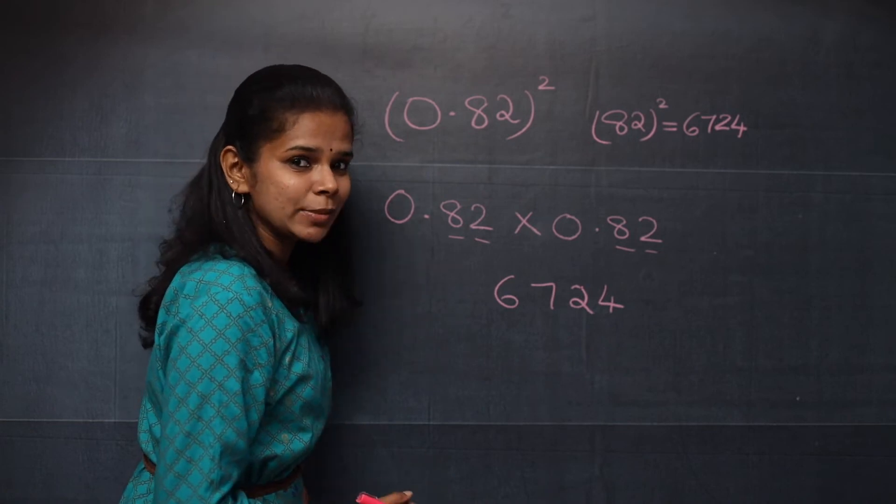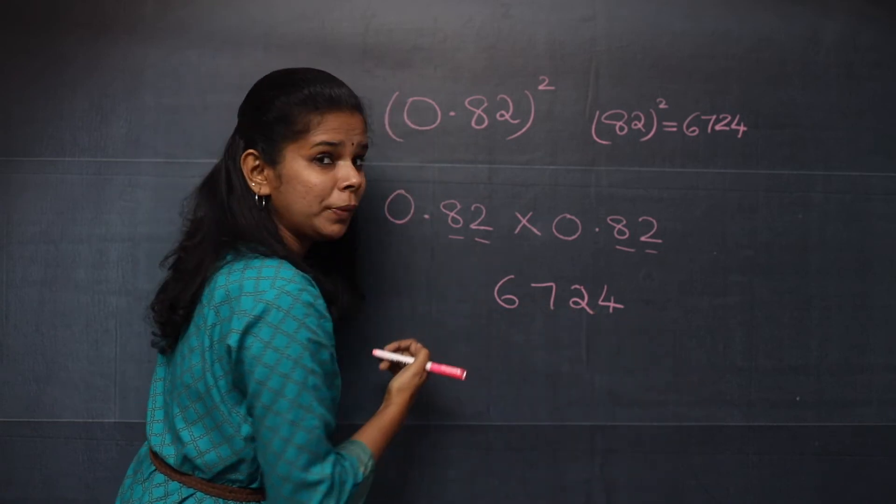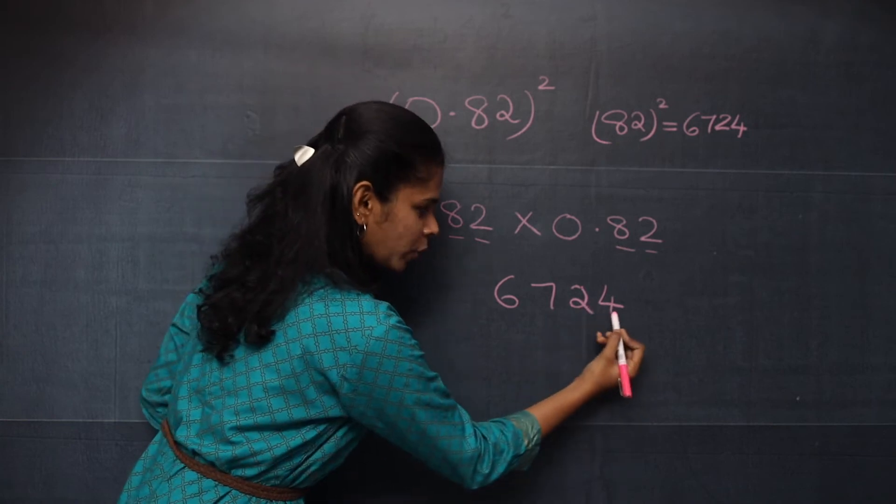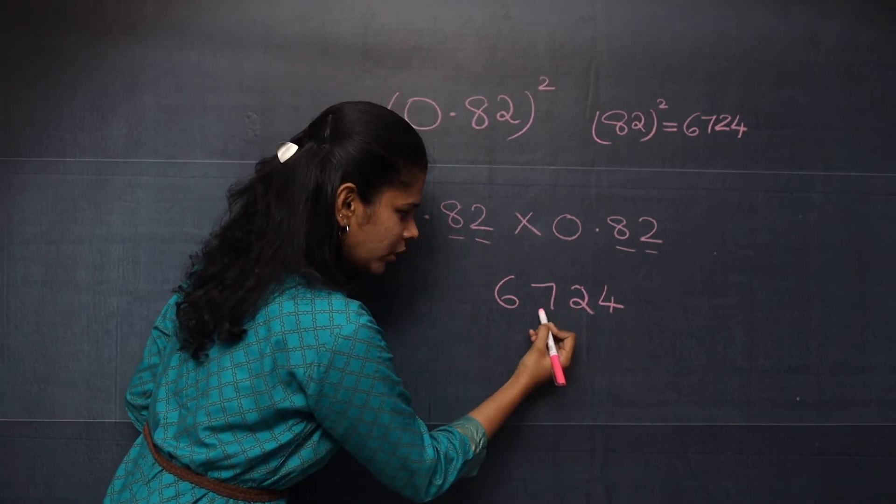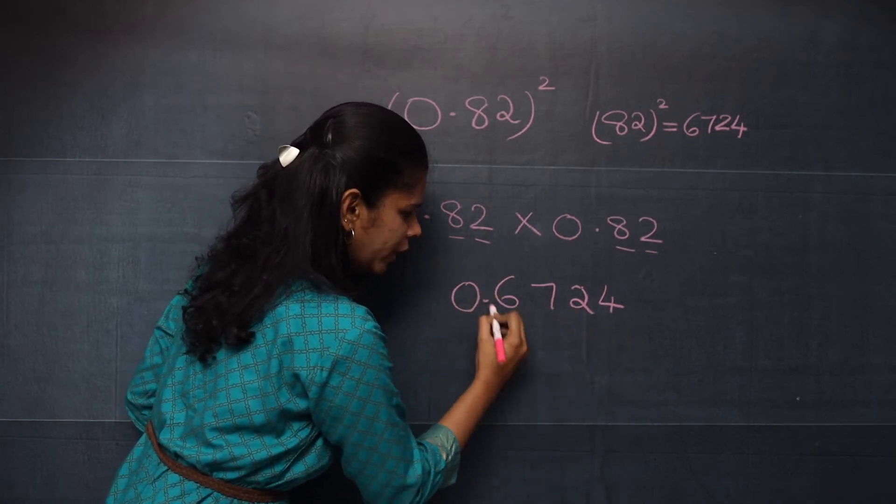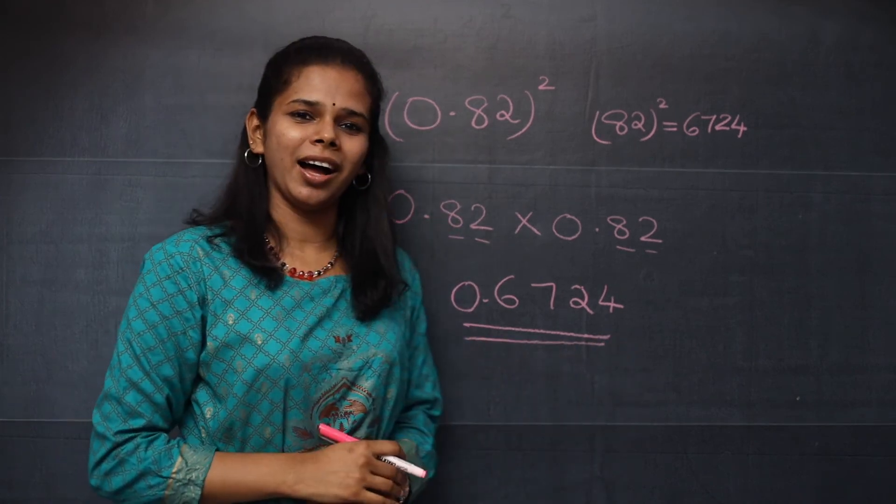You will put the decimal point from right to left. How many places should you move? 4. 1, 2, 3, 4. So 0.6724 is the answer.